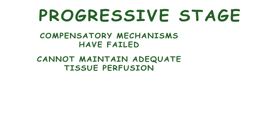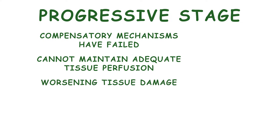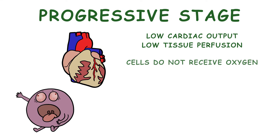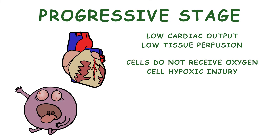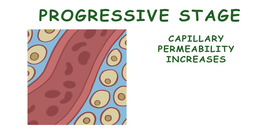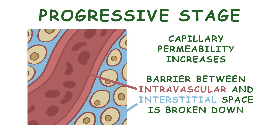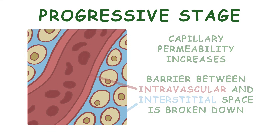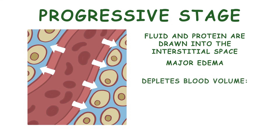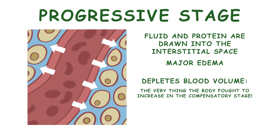During the progressive stage, compensatory mechanisms have failed. They are no longer able to maintain adequate tissue perfusion, which leads to worsening tissue damage. The body is now progressing towards multiple organ dysfunction syndrome. Low cardiac output means cells do not receive oxygen, succumbing to hypoxic injury, and cells begin to swell as ion pumps fail. Capillary permeability increases — the barrier between intravascular and interstitial space is broken down. Fluid and protein are drawn into the interstitial space, resulting in major edema. This depletes blood volume, the very thing the body fought to increase, which in turn decreases cardiac output and tissue perfusion.